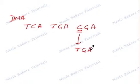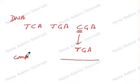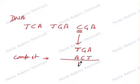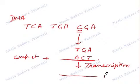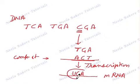Now this is the complementary strand. This complementary strand will have A, C, and T. When this complementary strand undergoes transcription — that means the information from this strand is transferred to RNA — we will get mRNA synthesized. So the code will be transcribed as U, G, and A. This UGA is a stop codon.